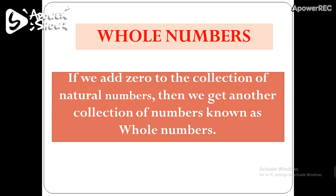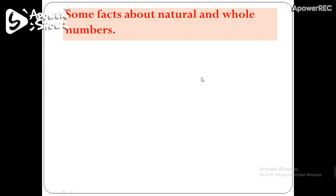we get a bigger collection, and that bigger collection is known as whole numbers — having one number more than the set of natural numbers, and that number is 0. Or we can say the numbers which start from 0: so 0, 1, 2, 3, 4 and so on — all those numbers are known as whole numbers.